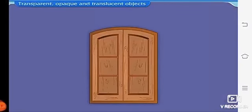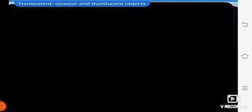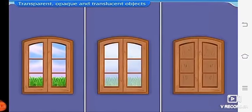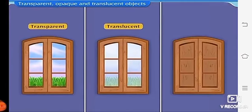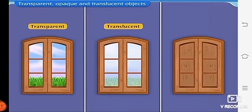Now, let us observe through the third window. Can we see anything? The things outside cannot be seen because the light rays cannot pass through the window. Thus, the first window is transparent, the second one is translucent and the third one is opaque.